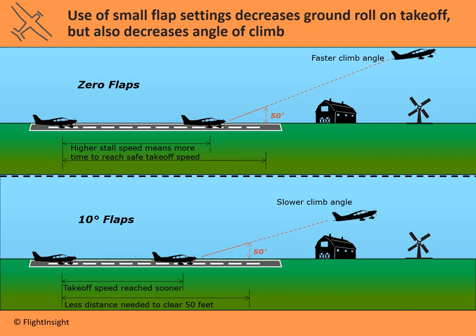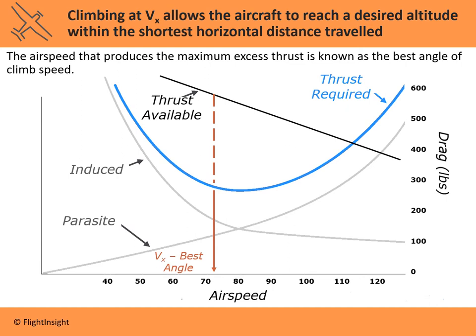This is a generalization — the engineers figure out the optimal flap setting for a short field takeoff, and they've done that work for us in the pilot's operating handbook. In a Cessna 172, the recommended flap setting for a short field takeoff is typically 10 degrees. It represents a moderate trade-off between a lot of lift and a little drag.